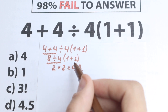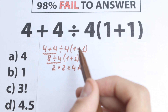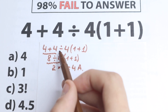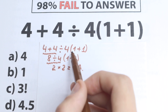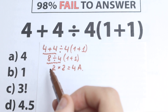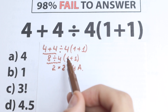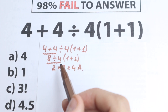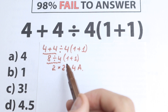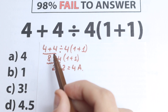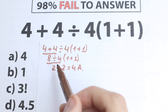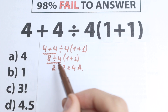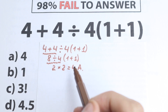Why is this absolutely incorrect? Because we don't follow the proper order of operations — we start with addition, then division, which is a huge mistake, and we forget about parentheses. It's a chaotic method, and this is absolutely the wrong solution. This may seem obvious to most of you since you prefer to work left to right and choose option A, but that approach is wrong.